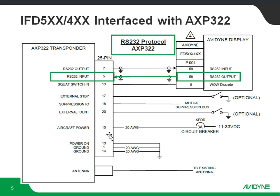Aircraft power — pay special attention to this. This power-on ground basically tells the AXP322 to go ahead and turn itself on as soon as it sees power coming from the 3-amp breaker on the aircraft power in. So if you've got an AXP322 that doesn't seem to be responding to anything, double-check that pin. There does have to be a ground right there on that pin.